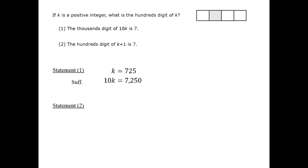Statement 2 tells us about the hundreds digit of k plus 1. Again, 725 is a permissible case because k plus 1, or 726, has a hundreds digit of 7. The question is, will the hundreds digit be 7 in all permissible cases?